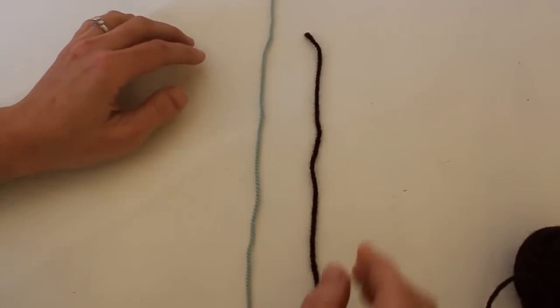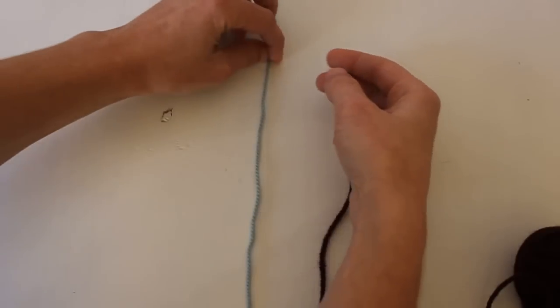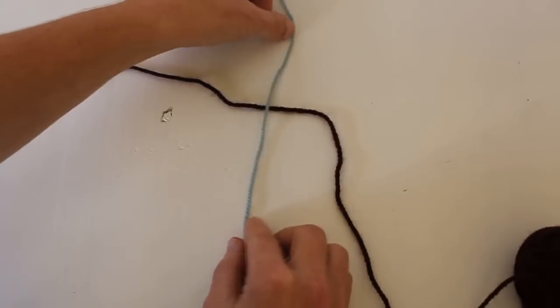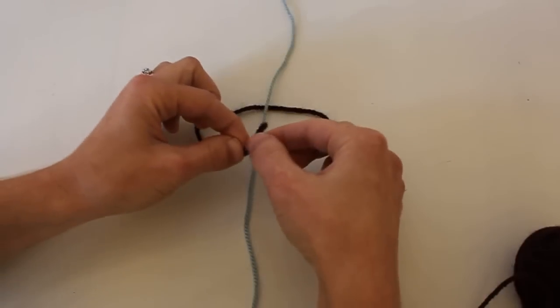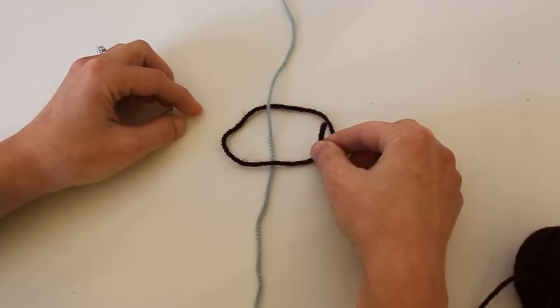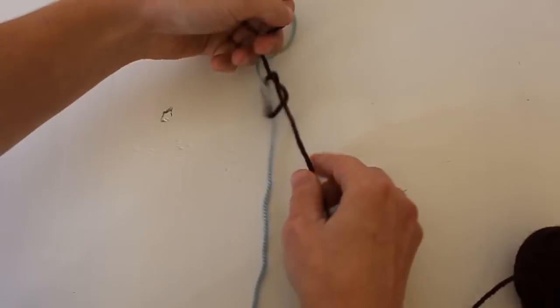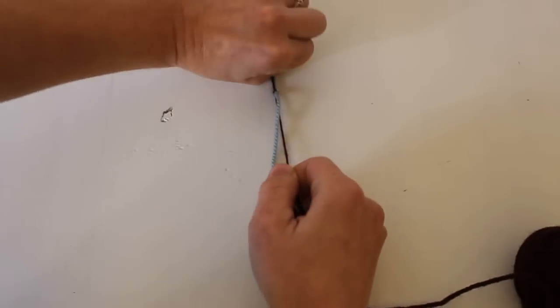So what you'll want to do is with the new yarn, you'll want to go underneath first, then over, and then through, and make a knot. Pull tight.